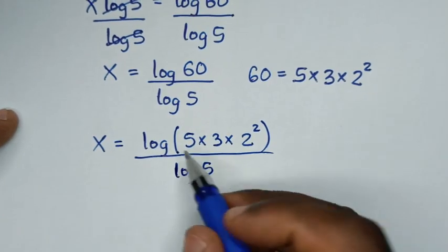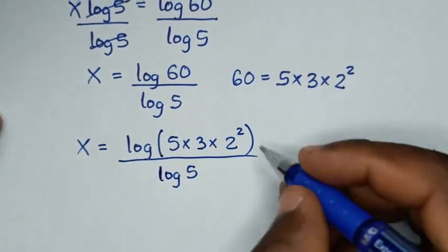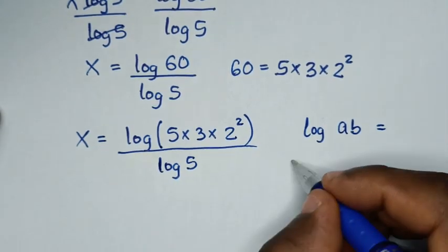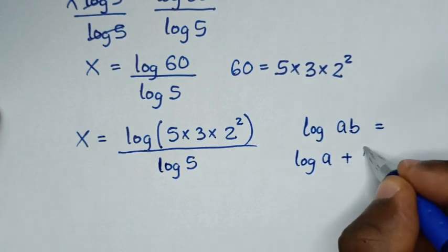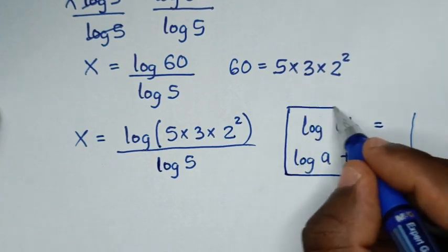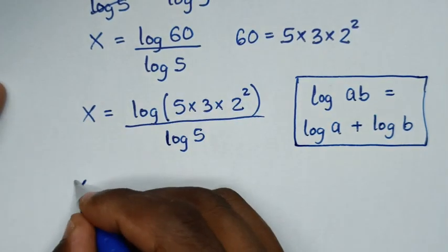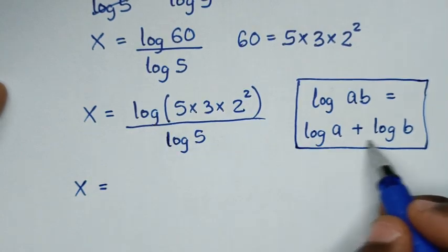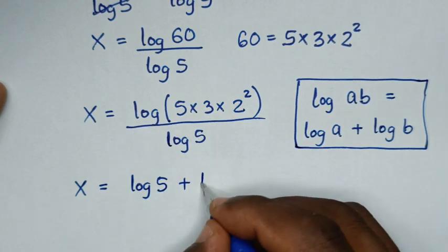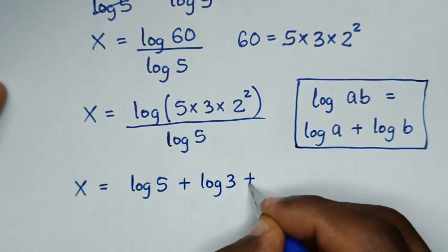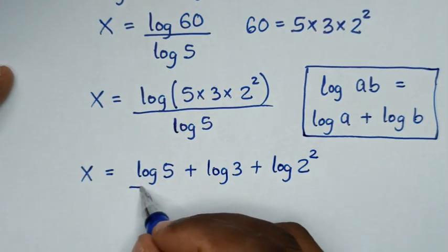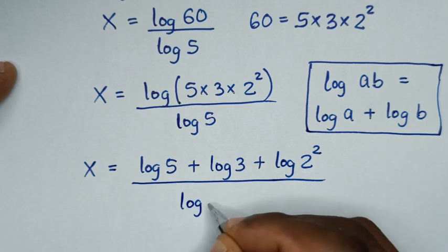Then in the next step, this part is in the form of log of a times b, which is equal to log of a plus log of b. So it will be x is equal to log of 5 plus log of 3 plus log of 2 squared, all over log of 5.